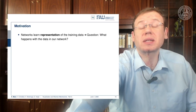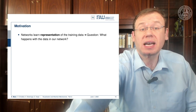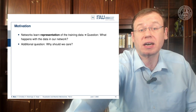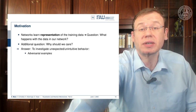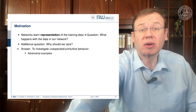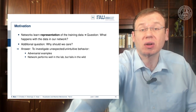Networks learn a representation of the training data, but the question is what happens with the data in our network. This is really important because it's very useful to investigate unintentional and unexpected behavior. One thing I really want to highlight here are adversarial examples. You also want to figure out why your network performs really well in the lab but fails in the wild.